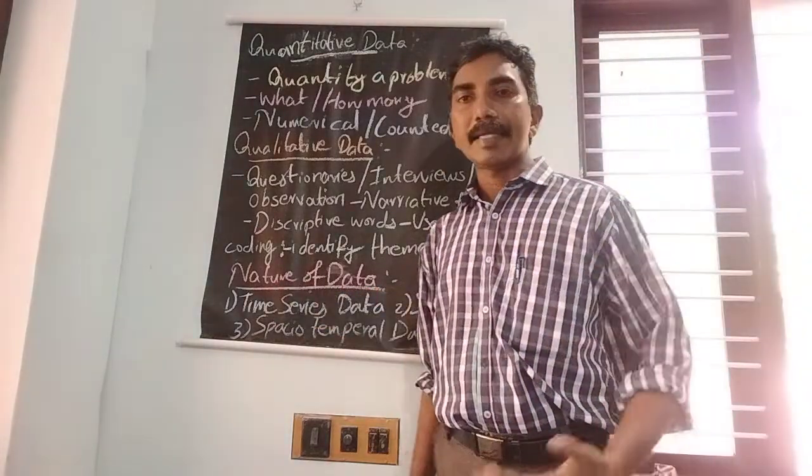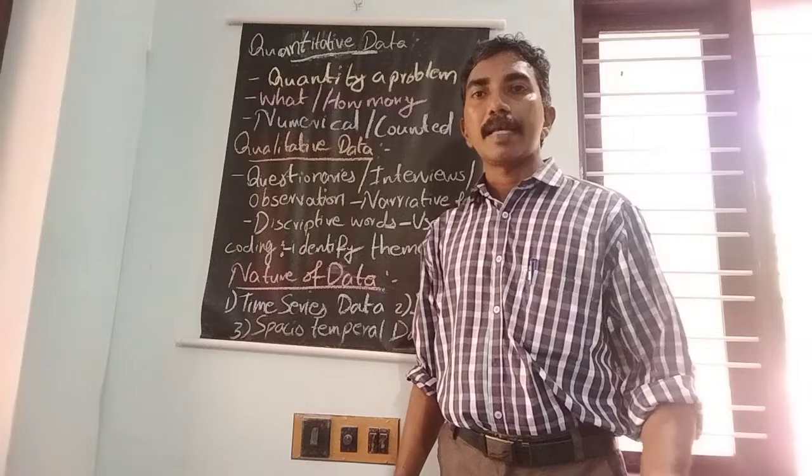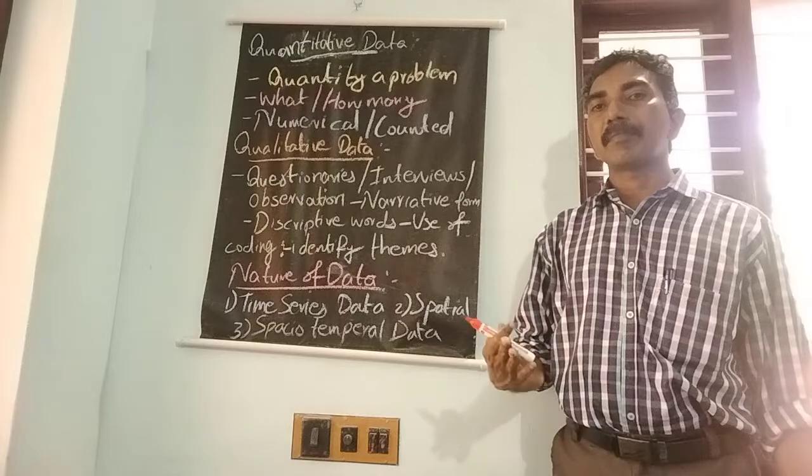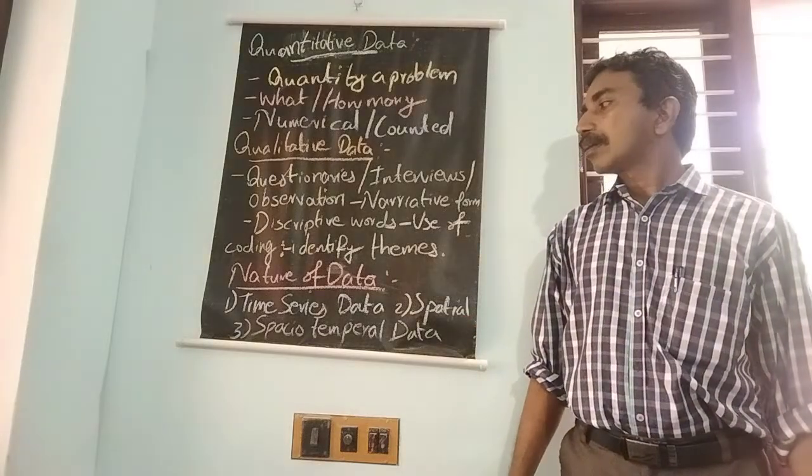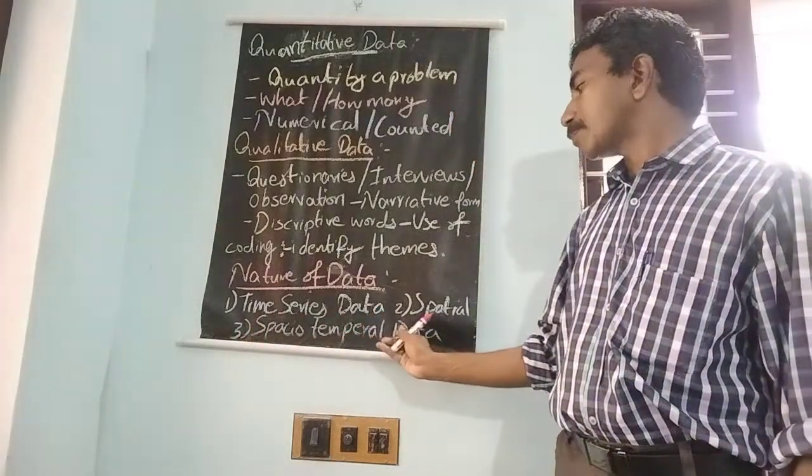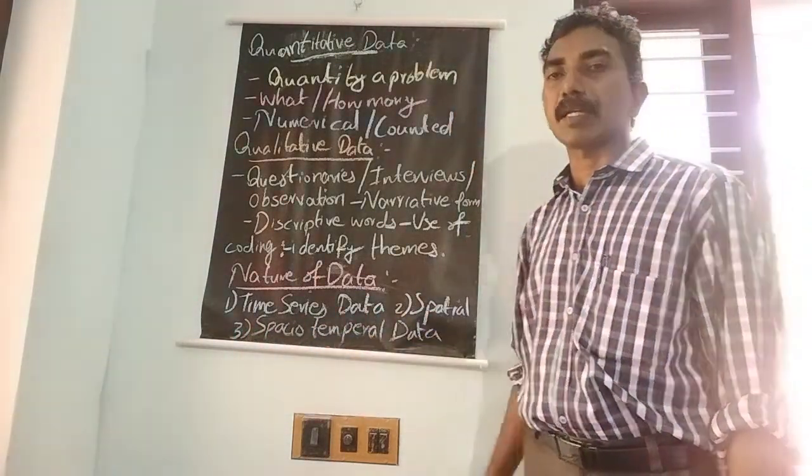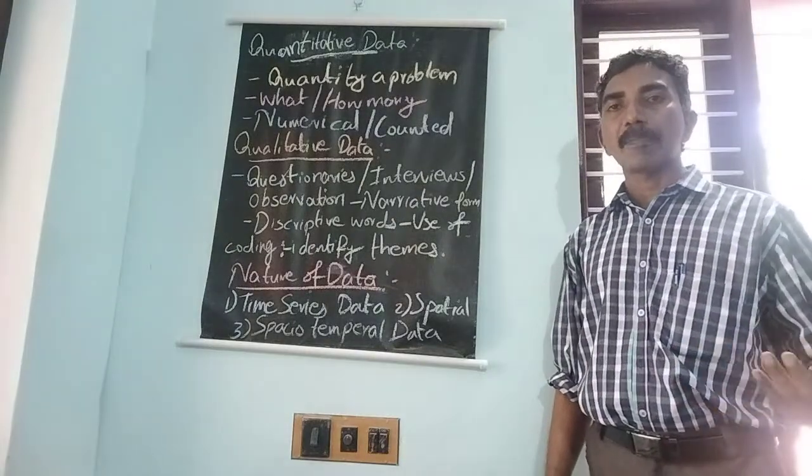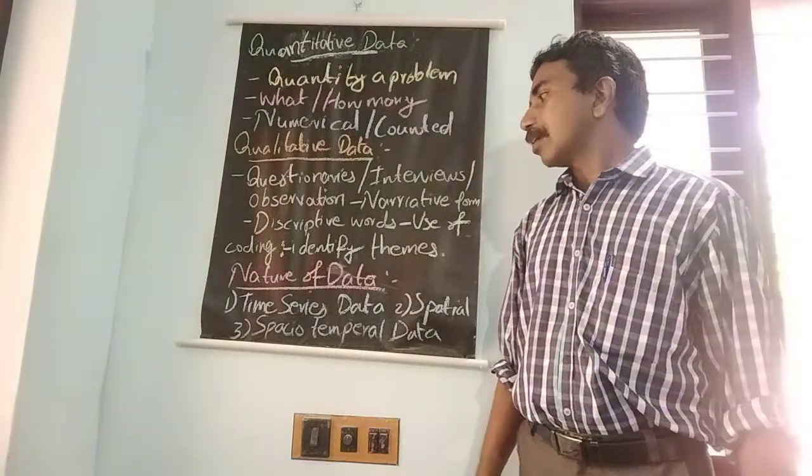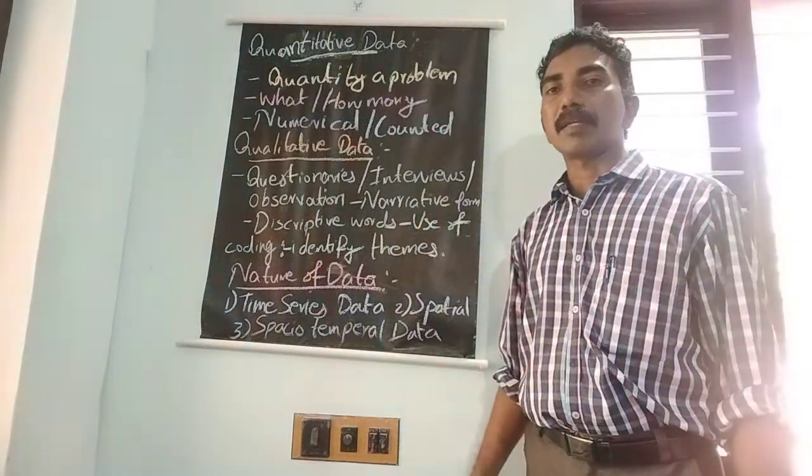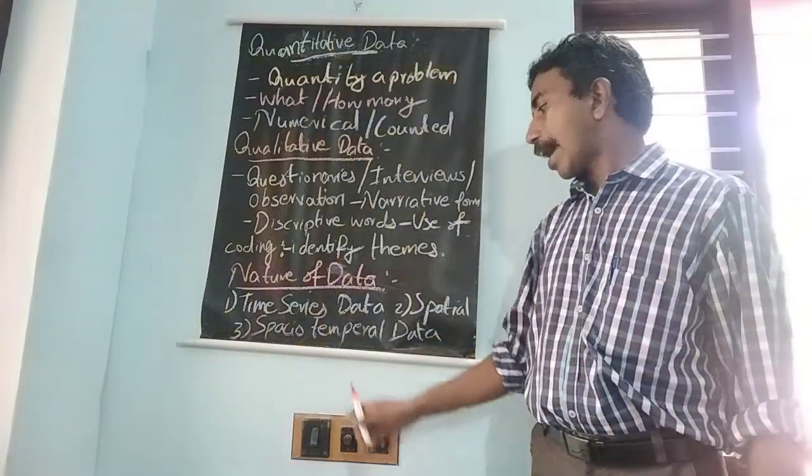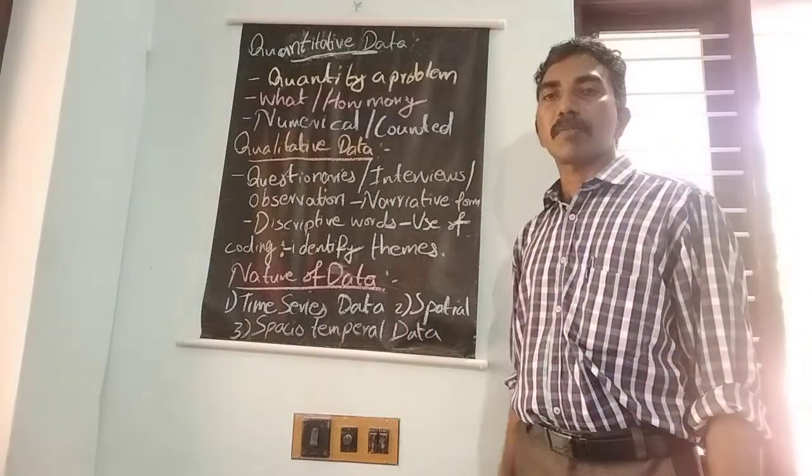Next, we will study nature of data. Data is connected with geographical location, time. Nature of data can be classified into three types. They are time series data, spatial data, and spatial temporal data. That's why, data is based on location and timing in the nature of data.